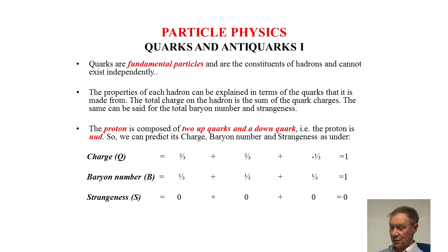Quarks and antiquarks. Quarks are fundamental particles and are the constituents of hadrons and cannot exist independently. The properties of each hadron can be explained in terms of the quarks that it contains. The total charge on the hadron is the sum of the quark charges.